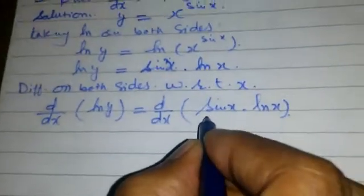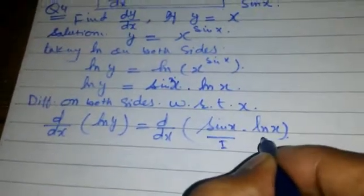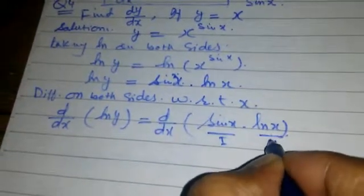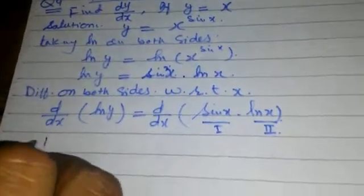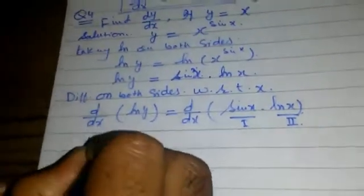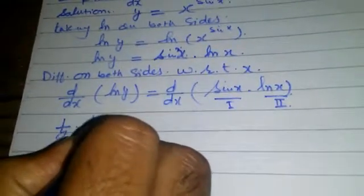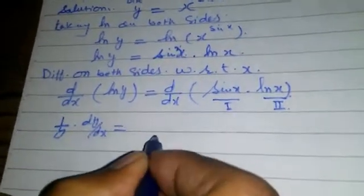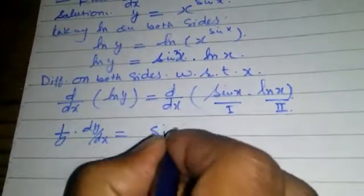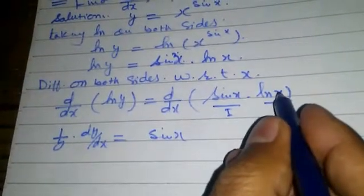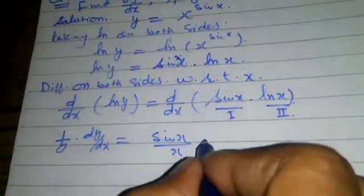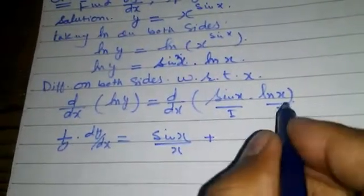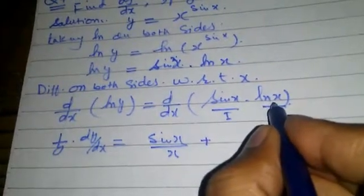We consider sin x as the first function and log x as the second function. This gives 1 over y into dy by dx, equal to sin x as is, and differential of log x is equal to 1 over x, plus log x as is and differential of sin x is cos x.